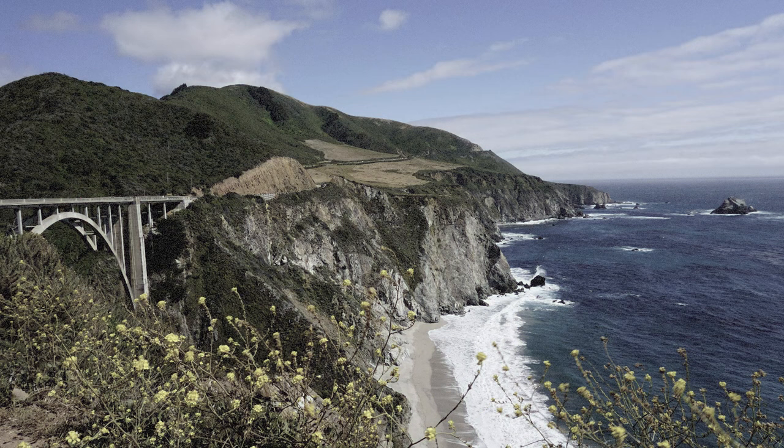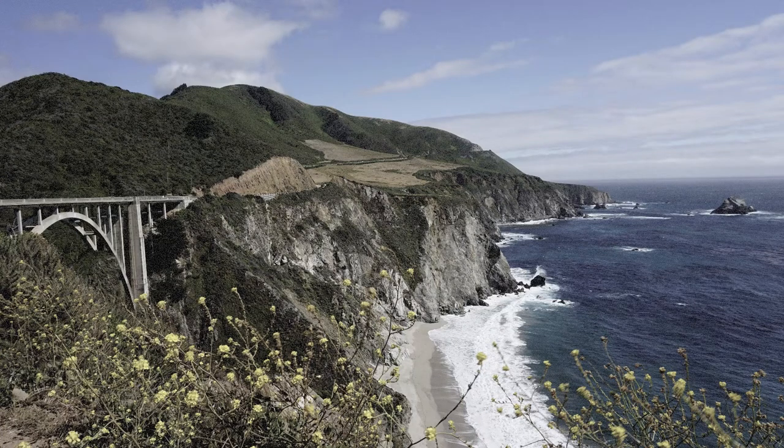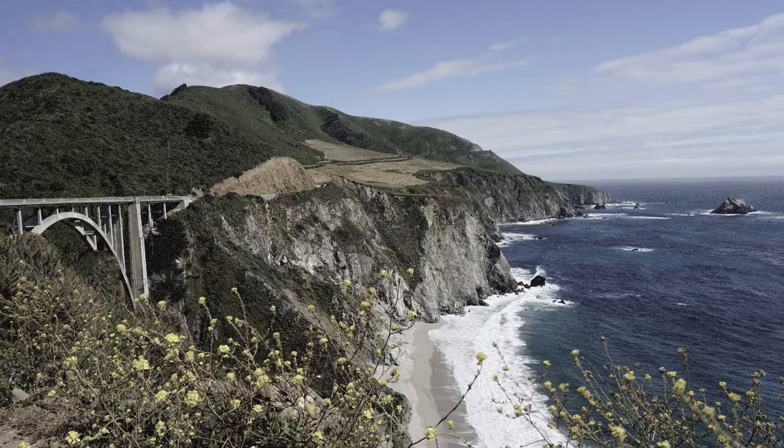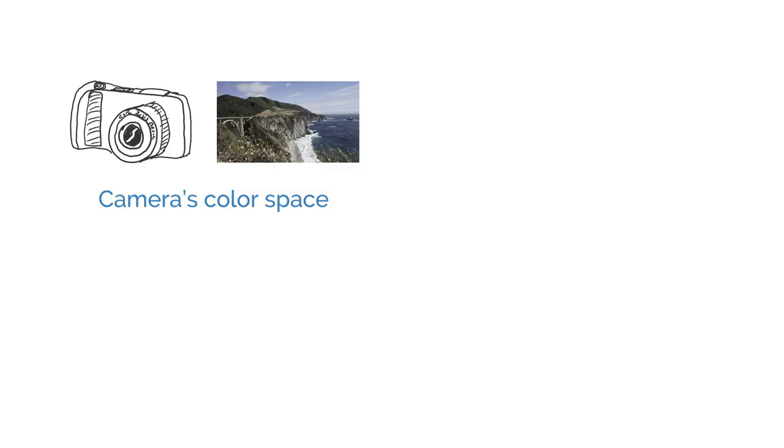Now we have a color balanced image. But there's still something about the colors that don't seem right. The colors seem a little washed and they don't look very accurate. That's because different sensors produce different results for the same color.